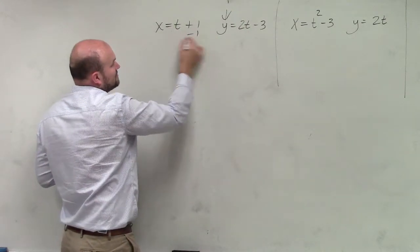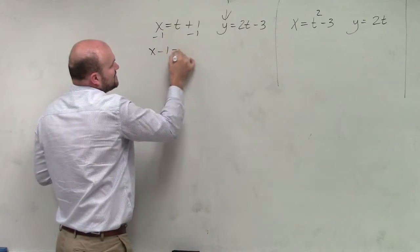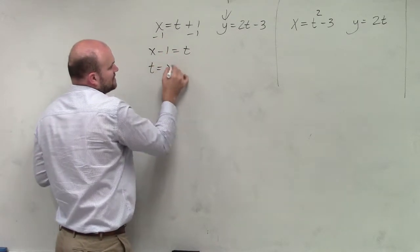So in this equation to solve for t, I'll subtract 1 on both sides. Because x minus 1 equals t, or t equals x minus 1.